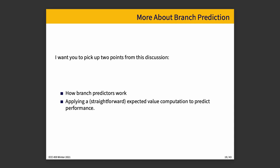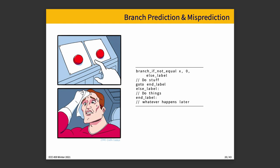Applying an expected value computation means: given some numbers, can we put together a back-of-the-envelope calculation that says if these numbers are correct, we expect it will take this long? That's very useful when making a decision — if this happens X percent of the time and this happens Y percent, and the costs are this and that, you can produce an overall measure of average behavior. Using pseudocode: branch if not equal X zero, go to the else label; otherwise do stuff, then go to end. If we went to else, we do things instead. The branch will be followed by either 'stuff' or 'things,' and pipelining doesn't know in advance.